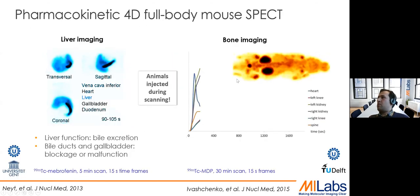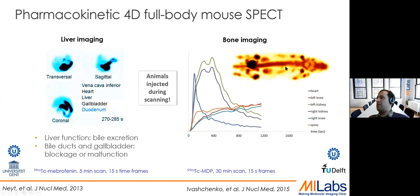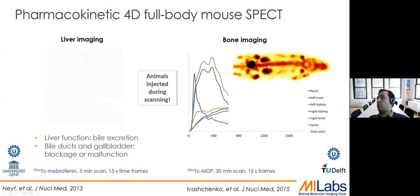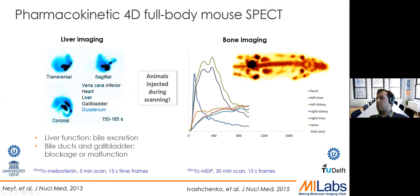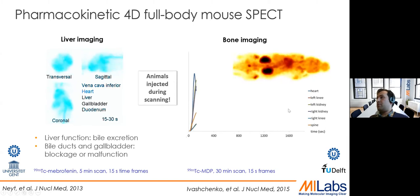We can also do total body bone imaging. This scan was done with MDP and the acquisition is extremely fast, allowing dynamic studies. We can actually see live pharmacokinetics in the bone and in different organs, plotting the uptake in different organs, thanks to the scanner's fast speed, high resolution, and high sensitivity.